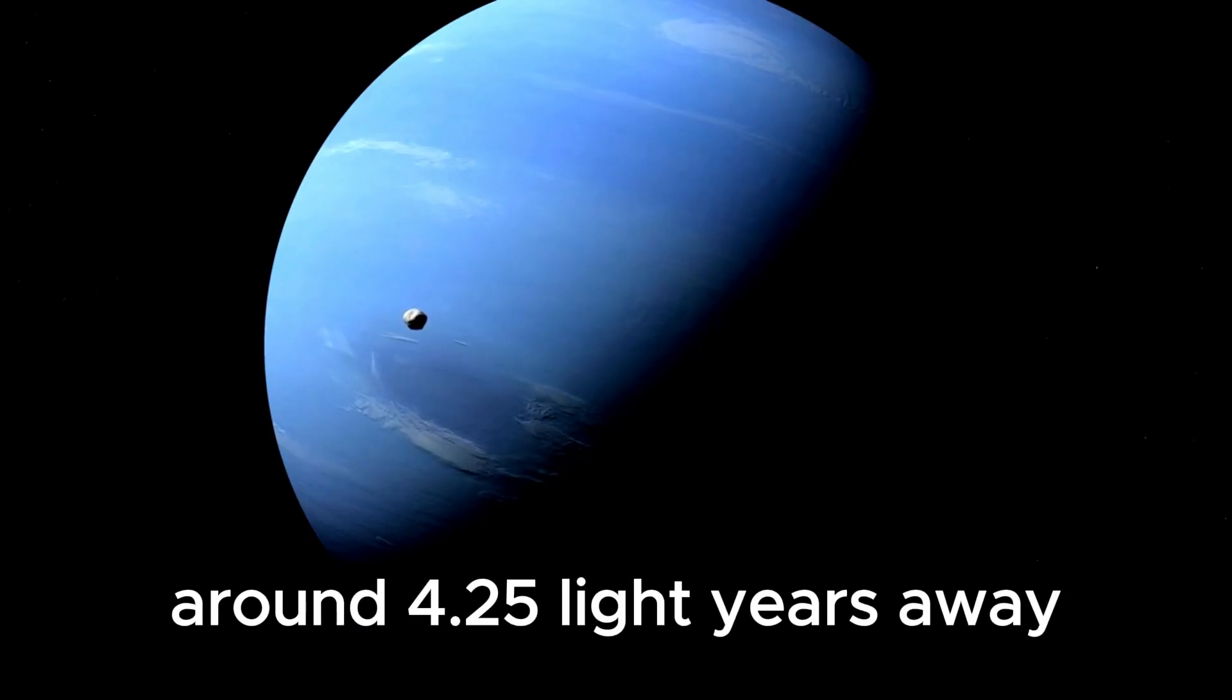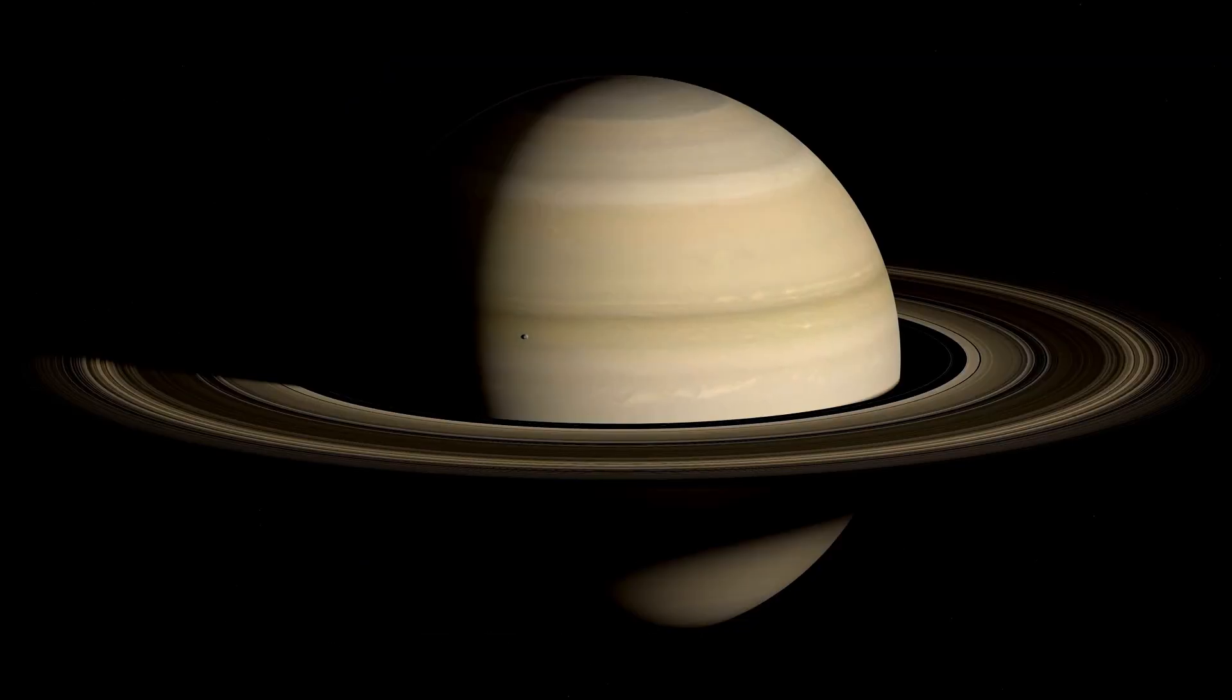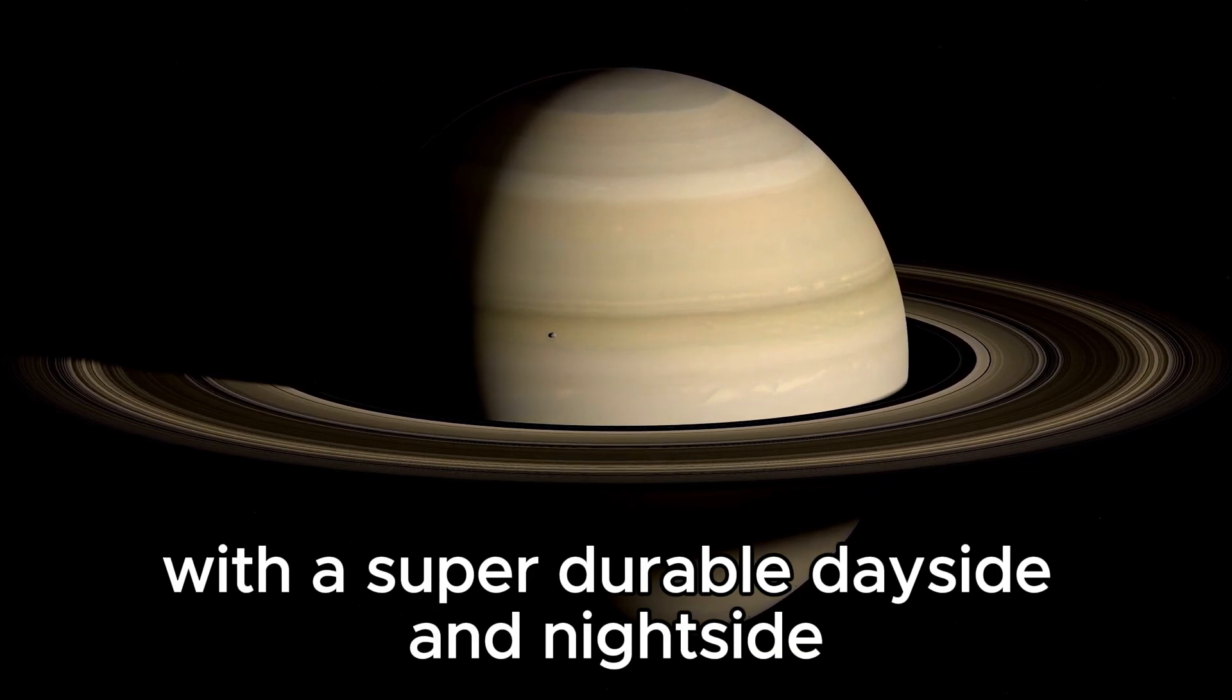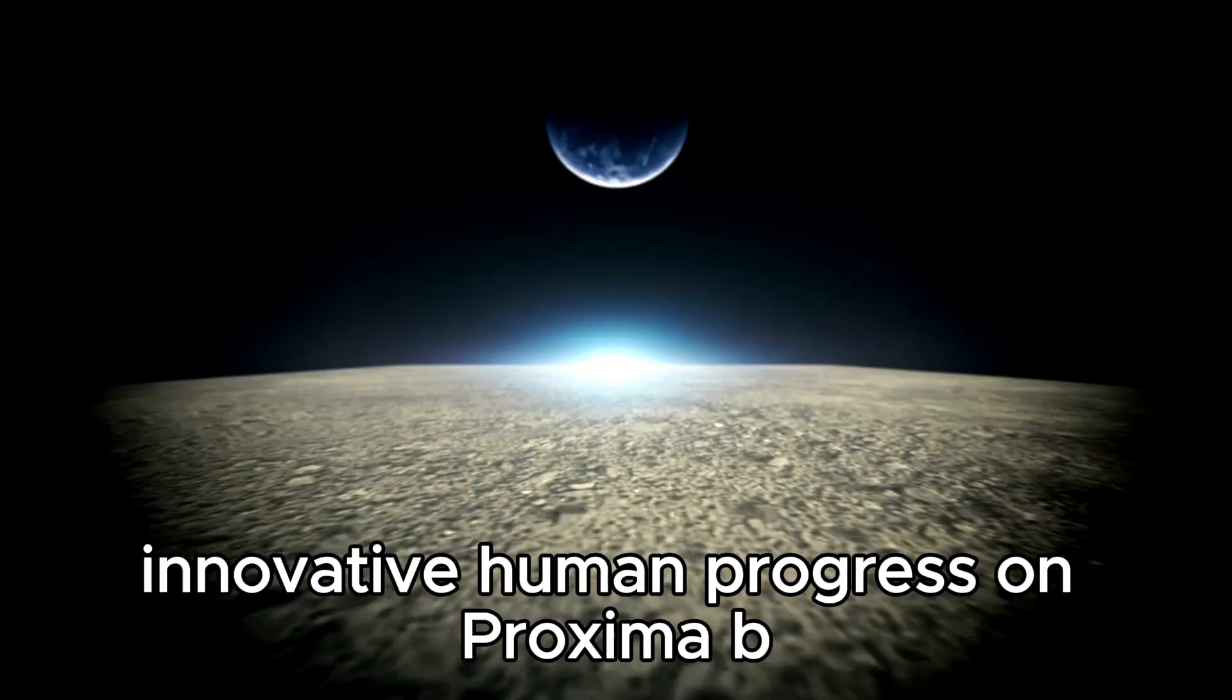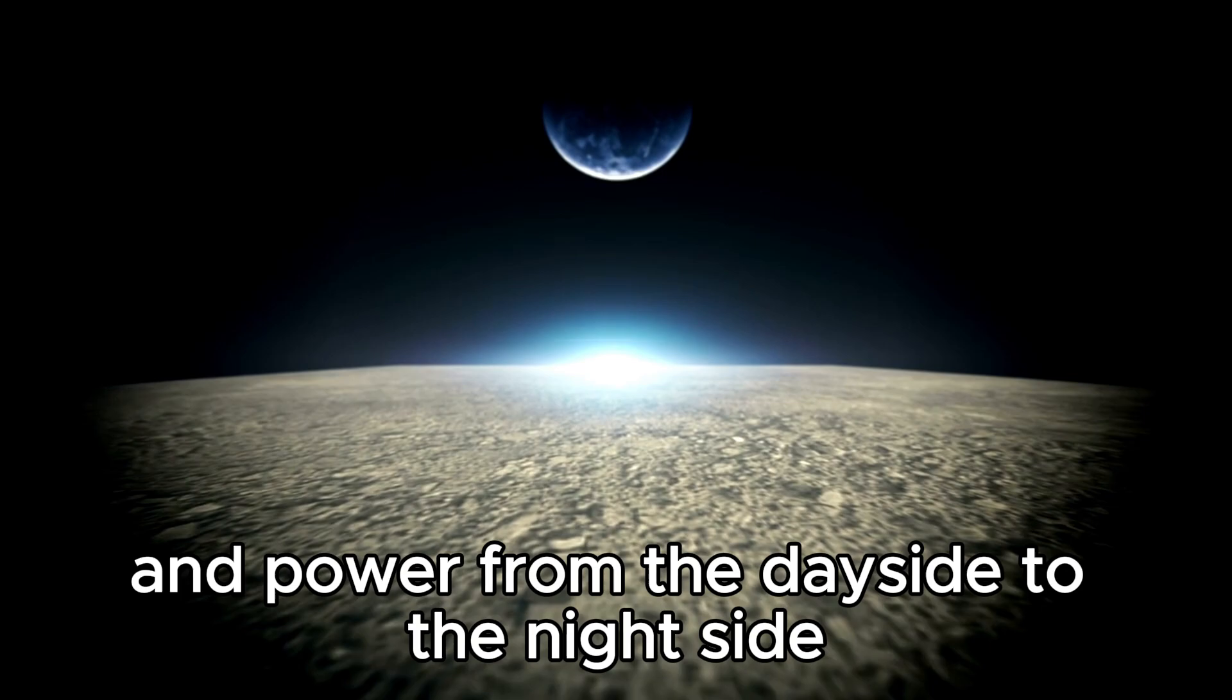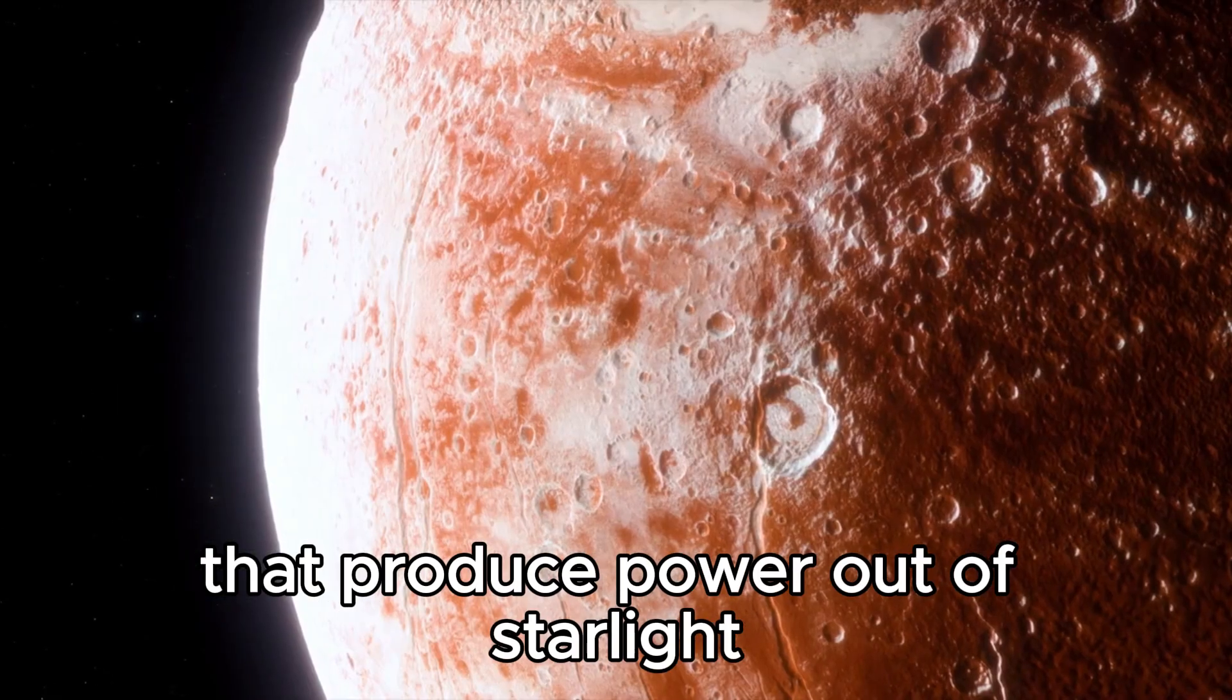around 4.25 light-years away. Since the exoplanet was much closer to its star than Earth is from the Sun, Proxima B was expected to be tidally locked, with a permanent dayside and nightside like our moon. A hypothetical technological civilization on Proxima B could move heat and power from the dayside to the nightside using photovoltaic cells that produce electricity from starlight.